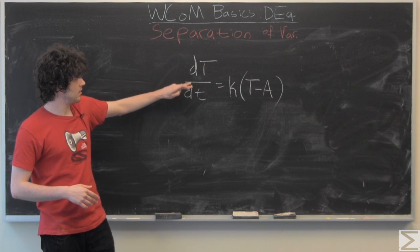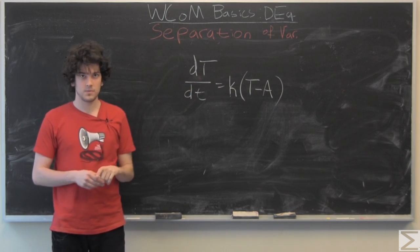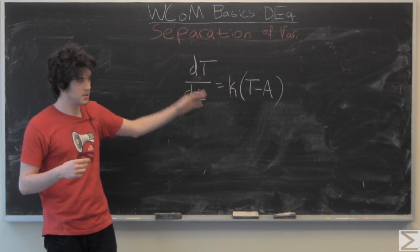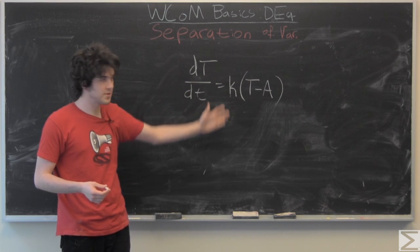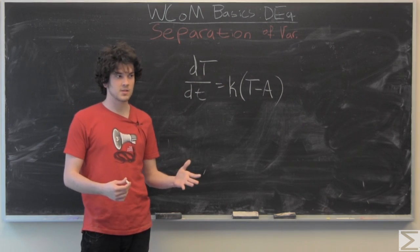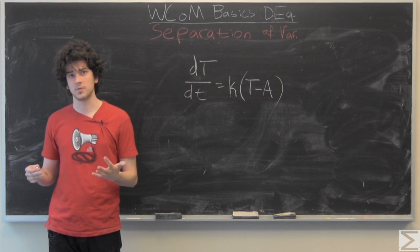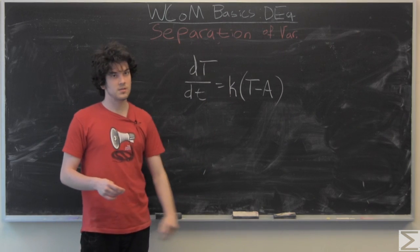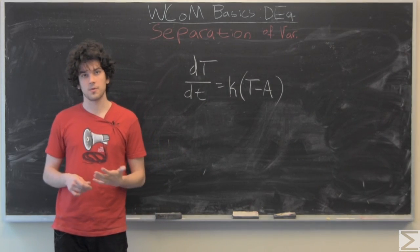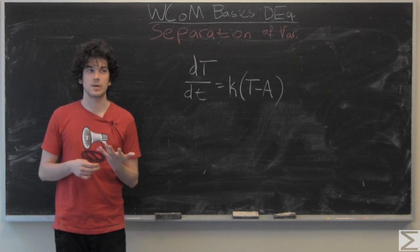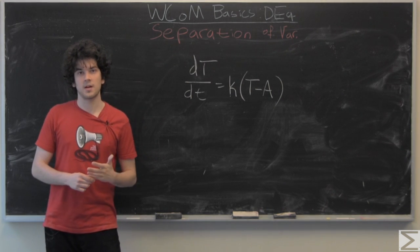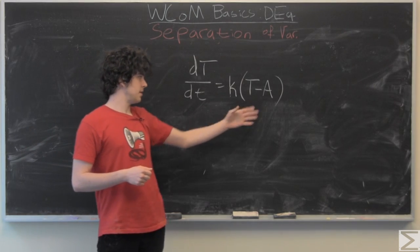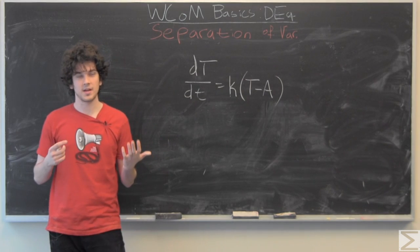So first I'll lay out the variables before I explain what it says. Capital T is temperature, so we're going to be looking at something and studying how its temperature evolves over time, and time of course is the little t. K is some constant that we will solve for with our initial conditions, so our temperature at time zero and our temperature at some random time that is not zero. And A is the temperature of the surrounding atmosphere.